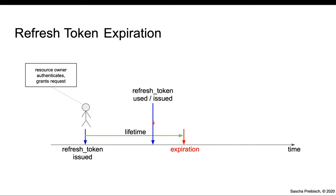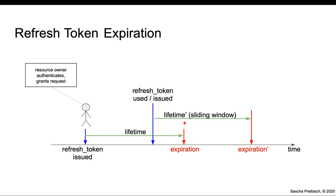At this point in time, the client uses the Refresh Token and the server issues a new one. In some scenarios, the server issues this token with a new lifetime. So this token will not end at the original expiration time — the lifetime will end after the lifetime of this newly issued Refresh Token. I phrase this as a sliding window, because if the client keeps using a Refresh Token before it expires again and again, the token lifetime would effectively never end.